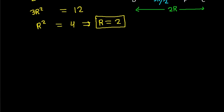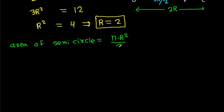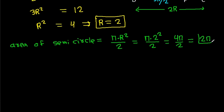And now, area of the semicircle = πR²/2 = π times 2² / 2 = 4π/2 = 2π.